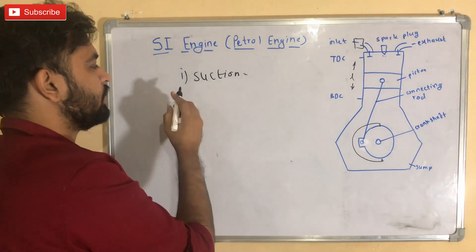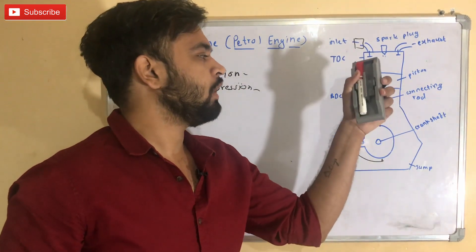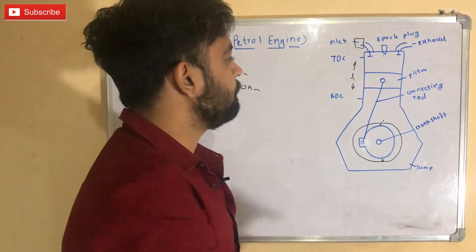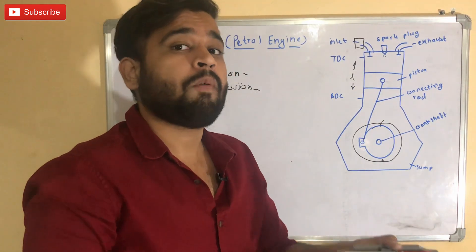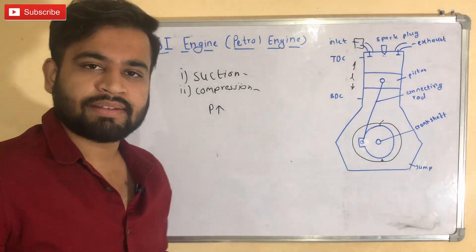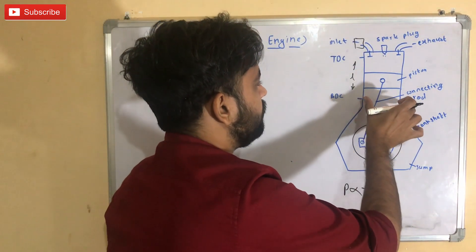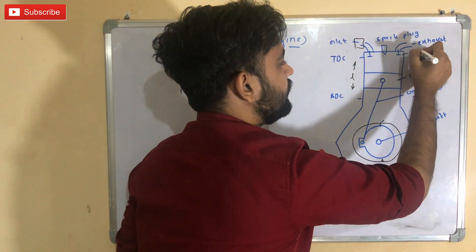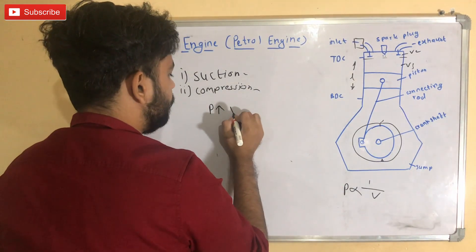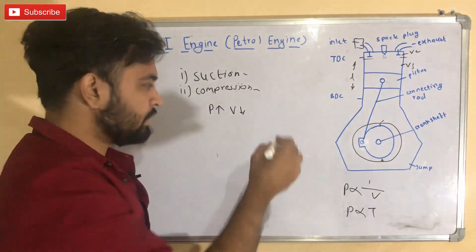The second process is compression. The piston moves from BDC back to TDC, and the crankshaft makes another half revolution. The air-fuel mixture inside the combustion chamber gets compressed — the distance between molecules reduces, causing pressure to build up. Since pressure is inversely proportional to volume, as the total volume (VC + VS) decreases, pressure increases. And since pressure is directly proportional to temperature, temperature also increases.